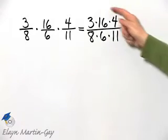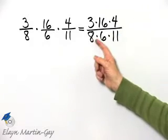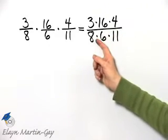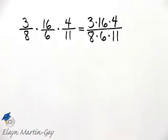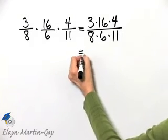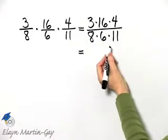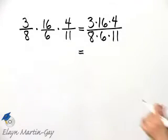Before we actually do all of this multiplication in the numerator and denominator, let's look for common factors. I know four and eight have a common factor of four, or four and six have a common factor of two. It makes no difference how you see this, but I do notice that eleven has no common factor, three is a prime, and it has a common factor with six. So let's do the following to be safe.